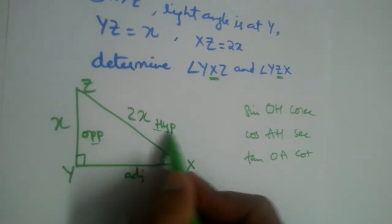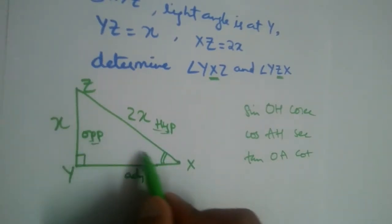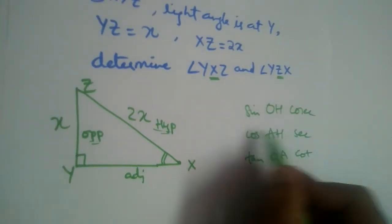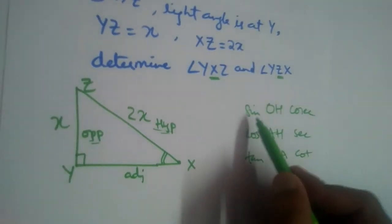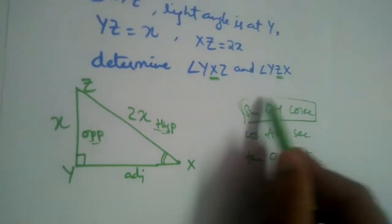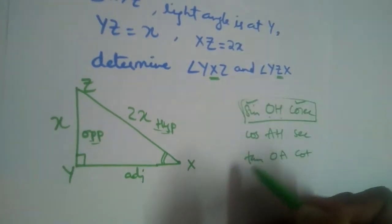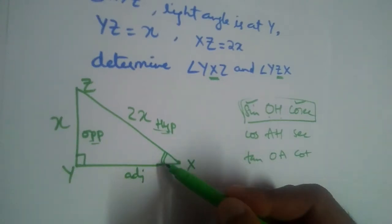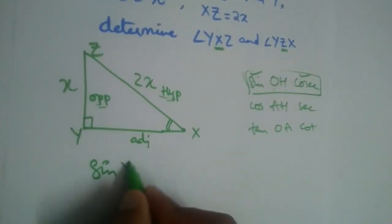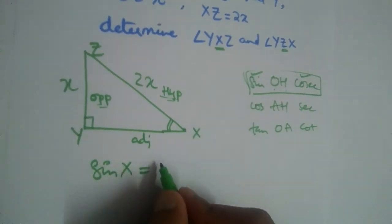So which two sides are given here? X and 2x, that is opposite side and hypotenuse side is given. So we need to find angle X. So here opposite and hypotenuse is coming in which formula? Which ratio? Opposite, hypotenuse. So we can either use sine or we can use cosecant also, right, to find the angle X. Let us use sine.